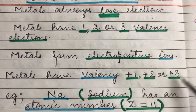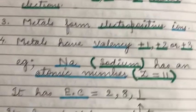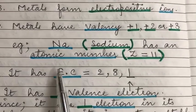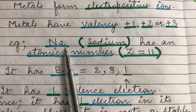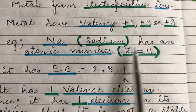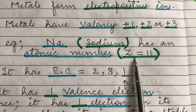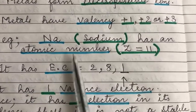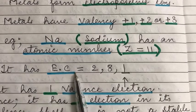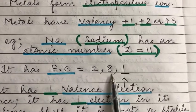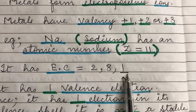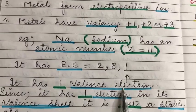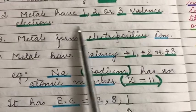These are the four basic points. Now let's understand this with the help of an example. Let's take sodium with the symbol Na. It has an atomic number Z equal to 11. Sodium has an electronic configuration of 2, 8, and 1.